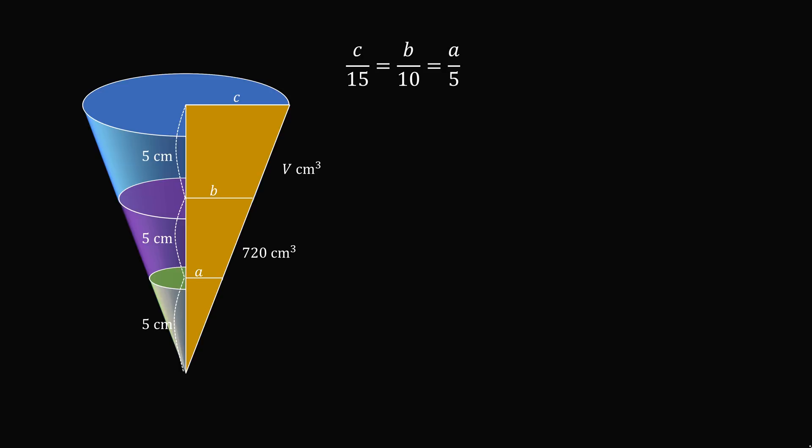We'll solve these equations so that we get expressions in terms of B. So we have A is equal to B over 2, and C is equal to 3B over 2.